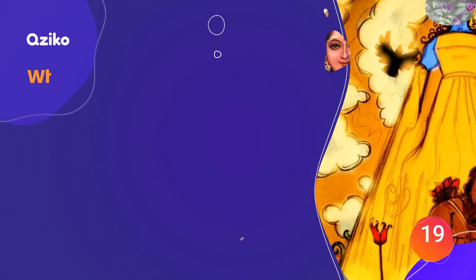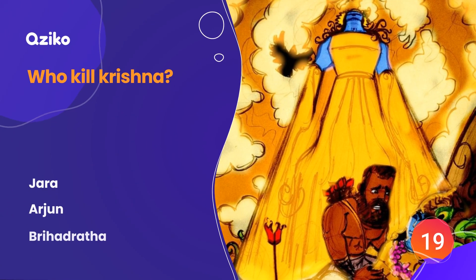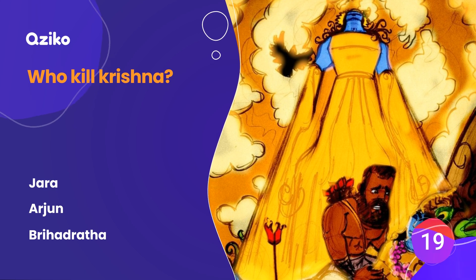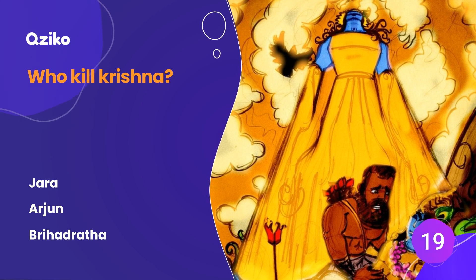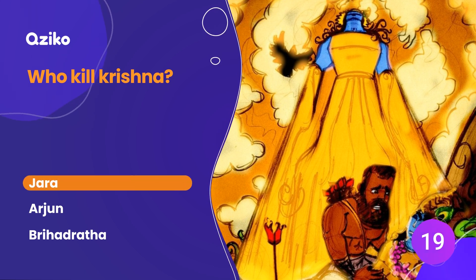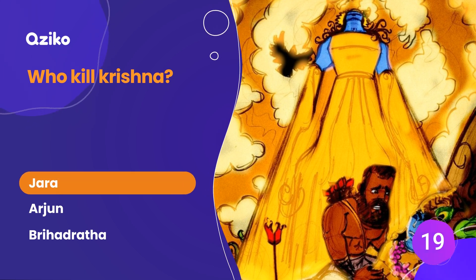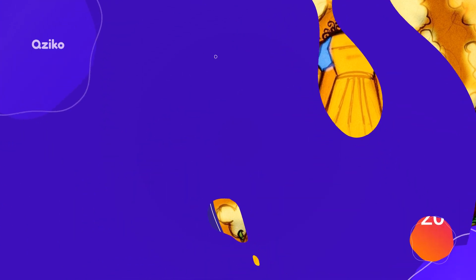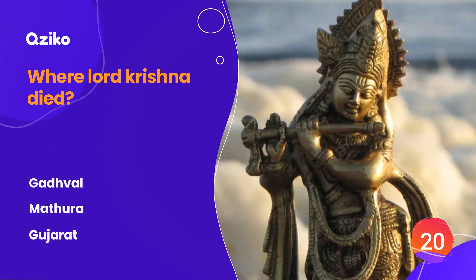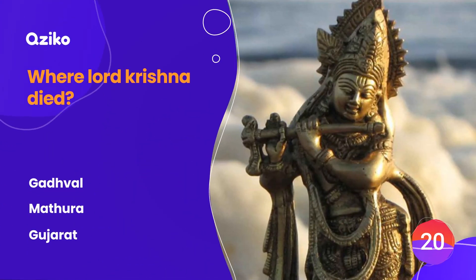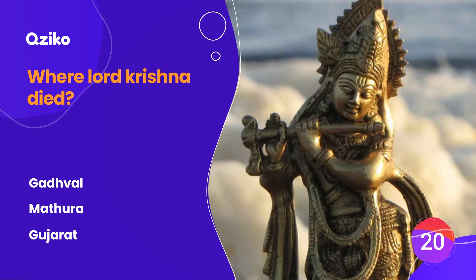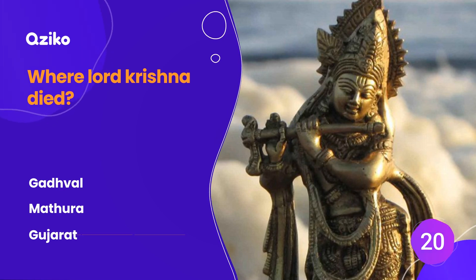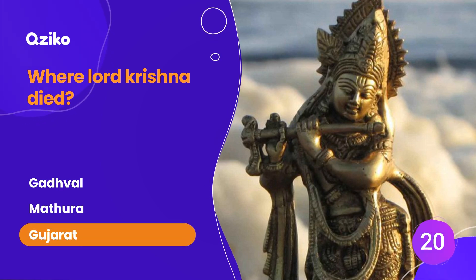Who killed Krishna? The right answer is Jara. Where did Lord Krishna die? The right answer is Gujarat.